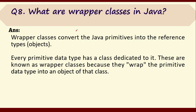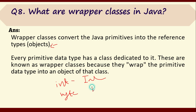Question number eight: what are wrapper classes in Java? Wrapper classes convert primitive data types into reference types, which allows you to use the methods of the corresponding class. For every primitive data type in Java, there is a corresponding wrapper class. For example, for int there is Integer, and for byte there is Byte (with a capital B because it is a class). These are called wrapper classes because they wrap the primitive data into an object of a class, and you can then use the methods of that class.